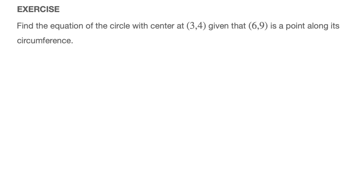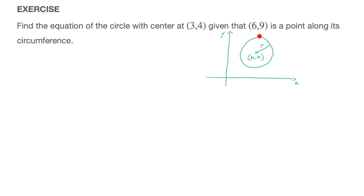To solve this problem we're going to be using the standard form of a circle's equation. Given a circle whose center has coordinates h and k and whose radius is r — where h and k are the x and y coordinates of the circle's center — in standard form, this circle's equation would be: (x − h)² + (y − k)² = r².